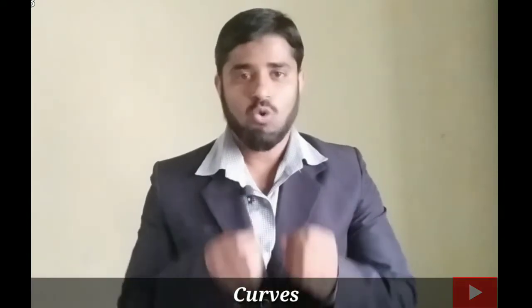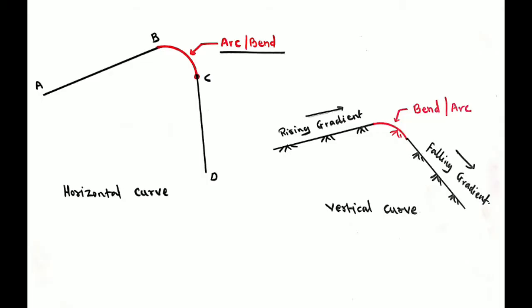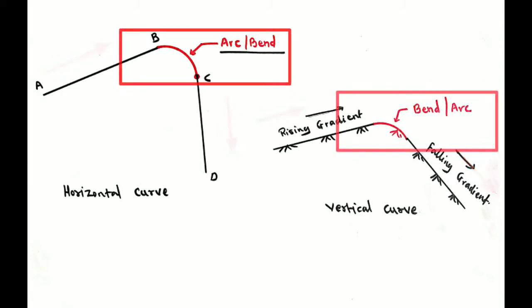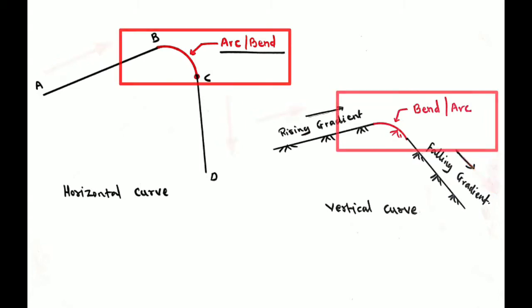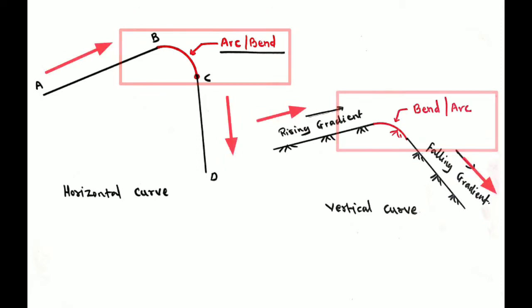Hello everyone, welcome back. In this video session we will learn about curves. What is the meaning of a curve? A curve is an arc or bend which is provided when there is a change in the alignment or direction of the road. We provide one arc in between two directions as a connection for the road or railway track. That arc or bend is known as a curve.